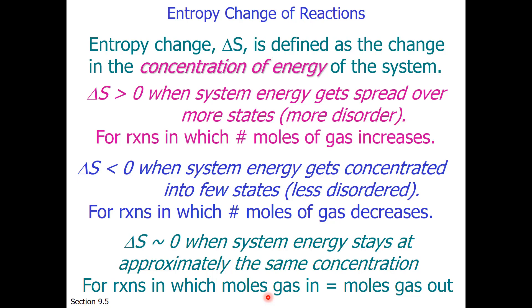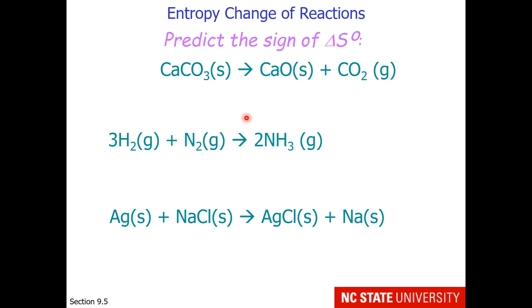Let me give you some examples. Let's look at these reactions and predict the sign of delta S at standard state. For this first reaction, the calcium carbonate is in the solid phase, so we have no moles of gas on the reactant side. We have some carbon dioxide gas on the product side, so we have one mole of gas. Gas is increasing, so the entropy change is also positive.